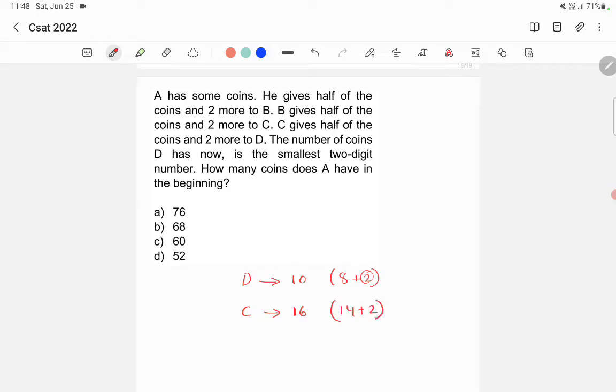Now 16 is 14 plus 2, right? So this is the two more. The question says that B gives half of what B has and two more to C. So B will be having 14 into 2, 28. So half of 28 is 14, plus 2 is 16. Similarly, 28 is 26 plus 2. So what A has is 26 into 2. So A will be having 52 coins.